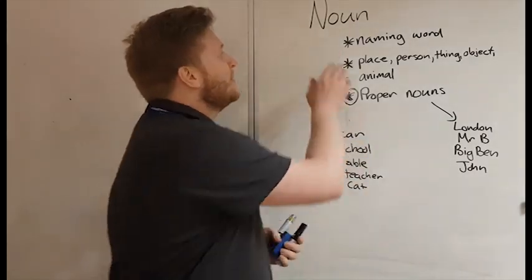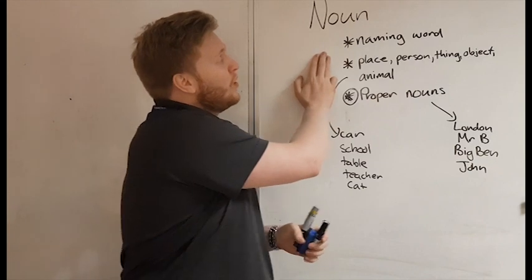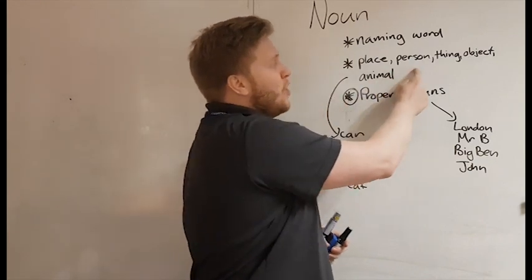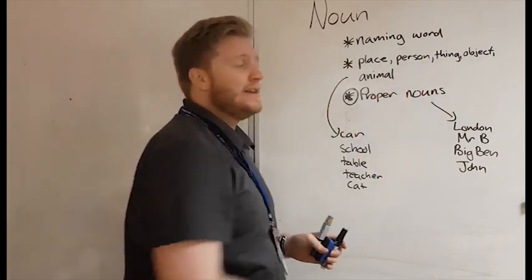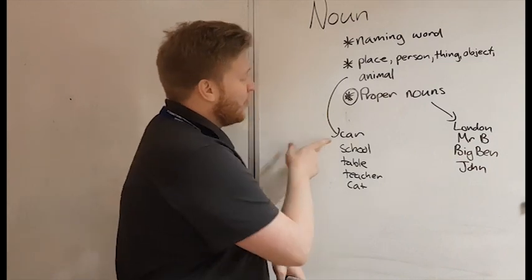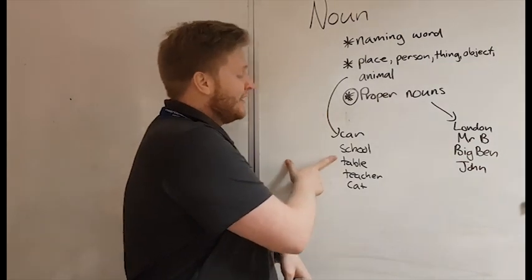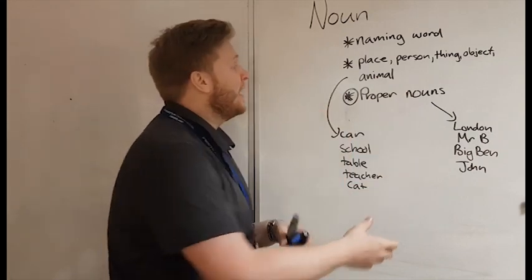So we're going to look at nouns. Quite simply a noun is a naming word and it's a name of place, person, thing, object, animal. Easy to remember, and so we've got things like car, school, table, teacher, cat. Those are all the names of certain things.